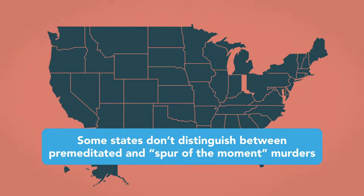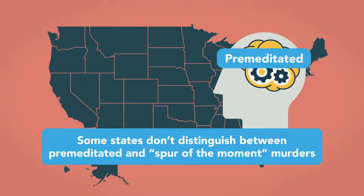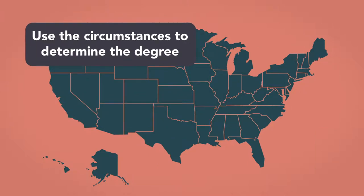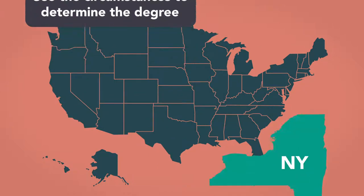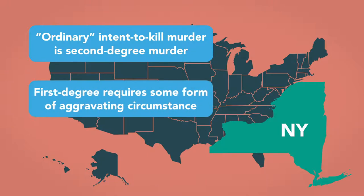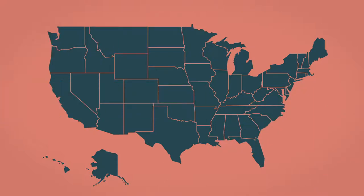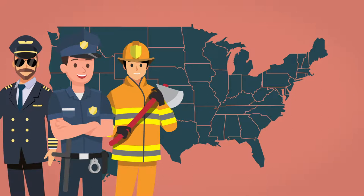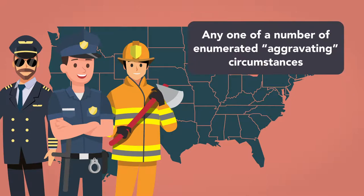Some states don't distinguish between premeditated and spur of the moment murders, but rather use the circumstances to determine the degree. In New York, for example, ordinary intent to kill murder is second degree murder, while first degree murder requires some sort of aggravating circumstance, such as that the victim was an on-duty police officer, peace officer, firefighter, or the like, or any one of a number of enumerated aggravating circumstances.